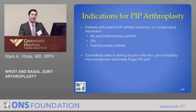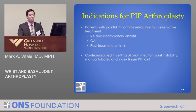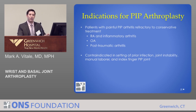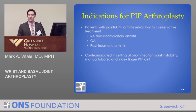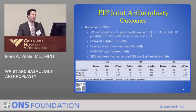Who may be a candidate for PIP joint arthroplasty? Patients with rheumatoid inflammatory arthritis, osteoarthritis, or post-traumatic arthritis who have failed conservative treatment — with all the usual contraindications. An additional contraindication: in the index finger, this is not a great option, and fusion probably performs better.